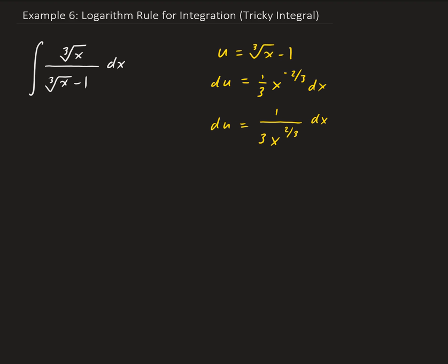This particular expression doesn't appear in our original integral, so we need to play an algebraic trick. We can rewrite the integral — cube root of x divided by cube root of x minus 1 — and multiply by x to the 2/3 in the numerator, while also placing x to the 2/3 in the denominator so we don't change the original problem.